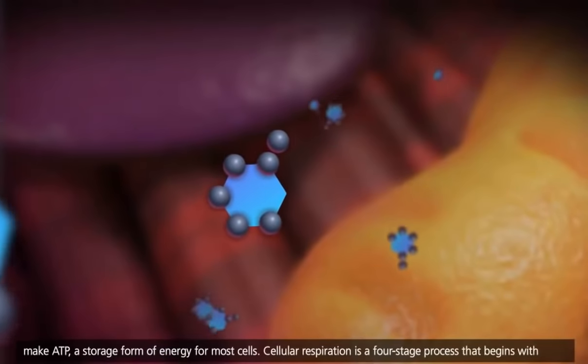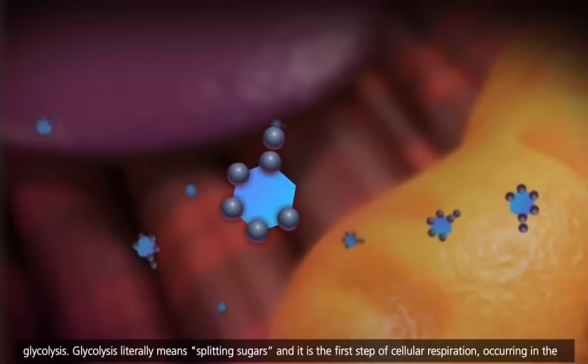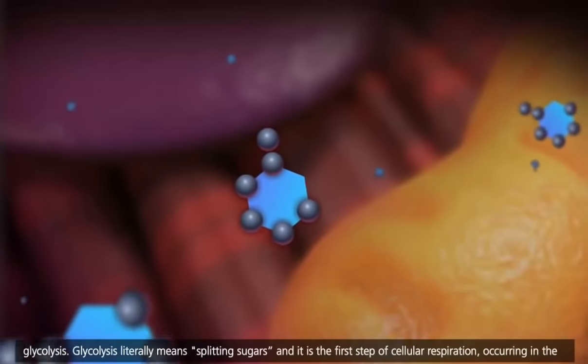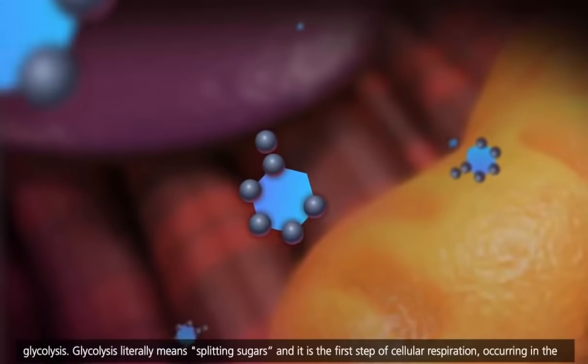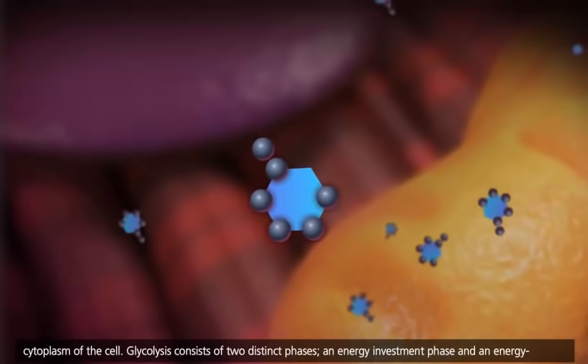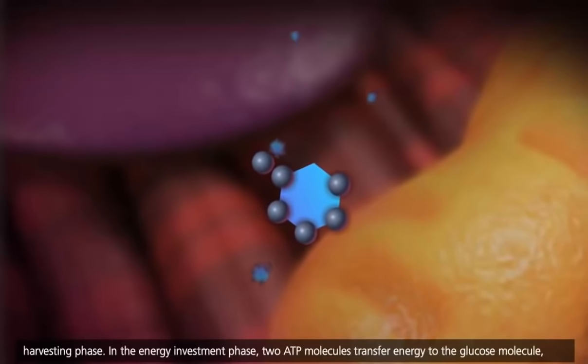Cellular respiration is a four-stage process that begins with glycolysis. Glycolysis literally means splitting sugars, and it is the first step of cellular respiration, occurring in the cytoplasm of the cell. Glycolysis consists of two distinct phases, an energy investment phase and an energy harvesting phase.